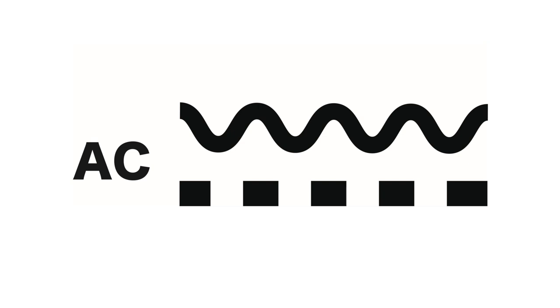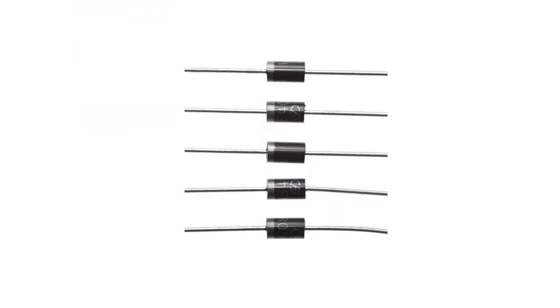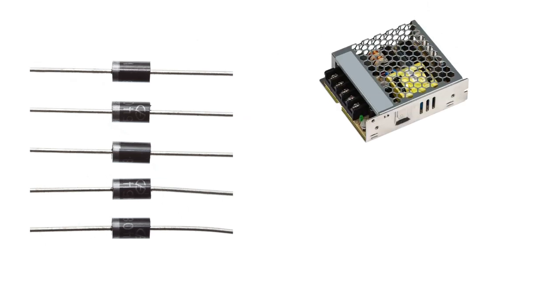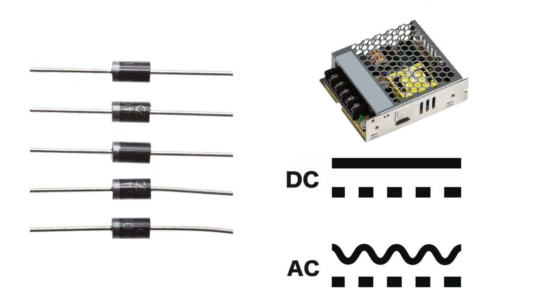Rectification is the conversion of alternating current to direct current. Rectifier diodes are used in power supplies to convert AC to DC, and also in circuits where a large current must pass through the diode.